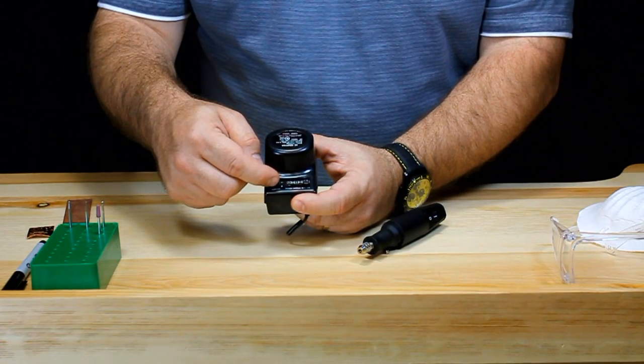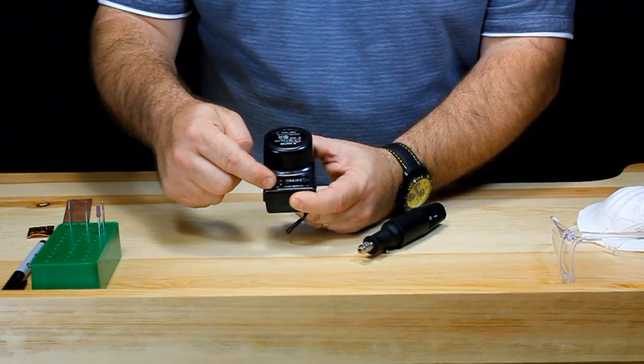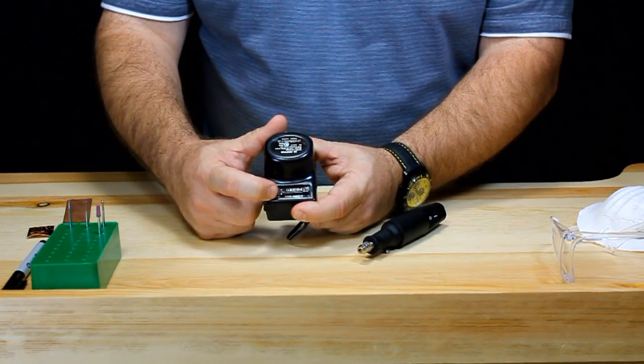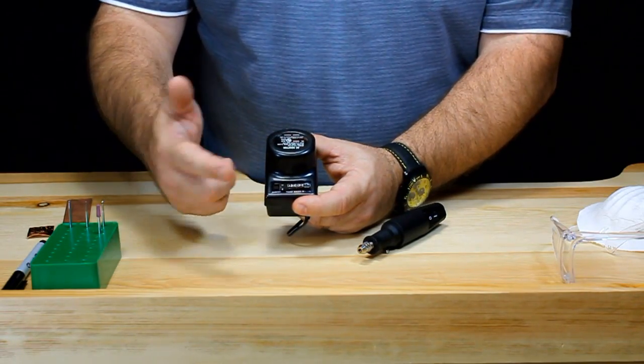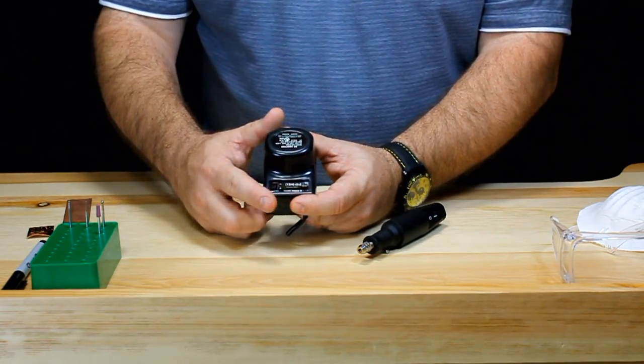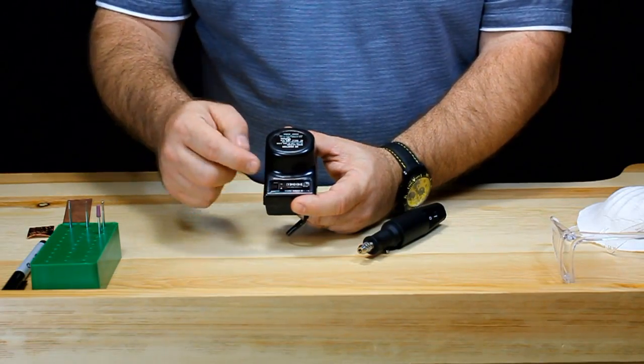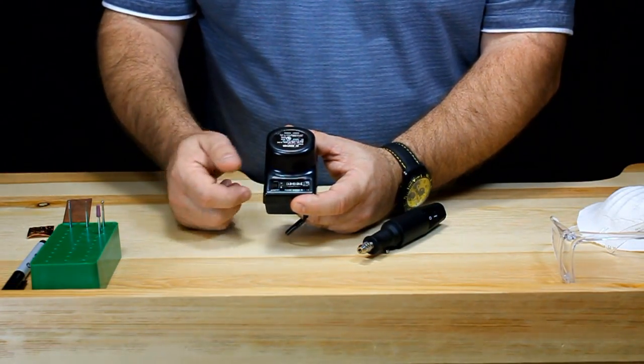The other switch here is marked polarity and basically all that means is you select which direction the handpiece is going to spin. Whether you're right handed or left handed can make a difference and we'll talk about that later. So set those ahead of time before you use your handpiece and you'll be ready to go.